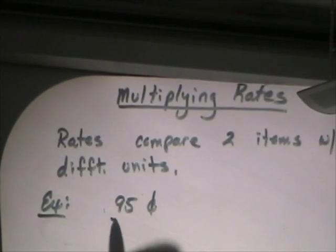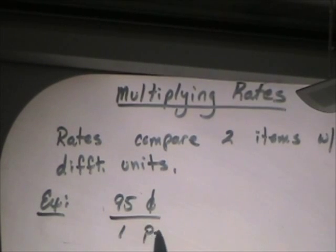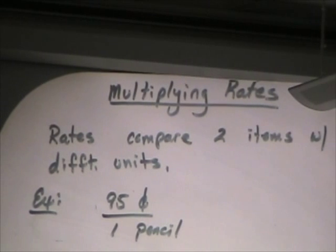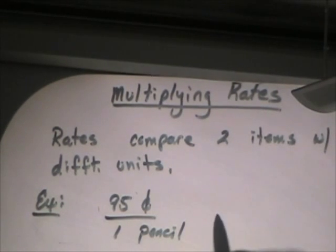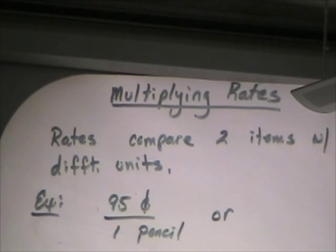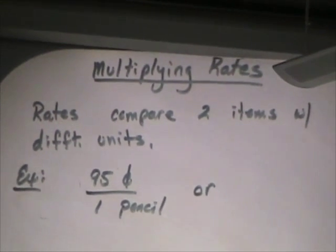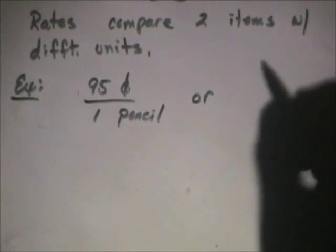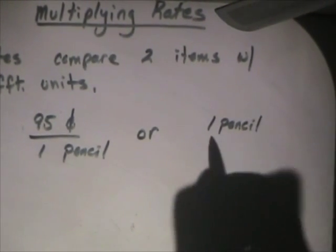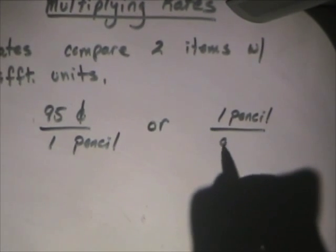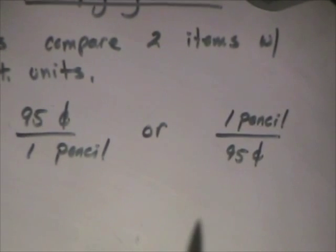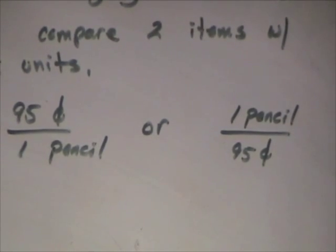Five cents for one pencil. It kind of looks like a fraction, but the thing that makes it different than a fraction is you can write this another way and have it be exactly the same thing. I can write it this way: one pencil for ninety-five cents. And those mean exactly the same thing.